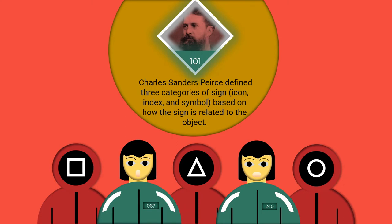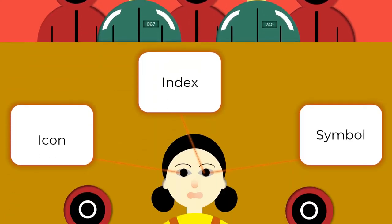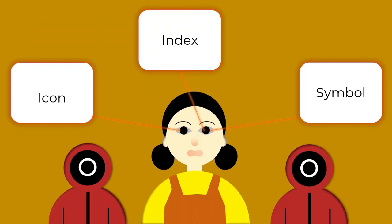Charles Sanders Peirce defines three categories of sign, which are icon, index, and symbol, based on how the sign is related to the object.